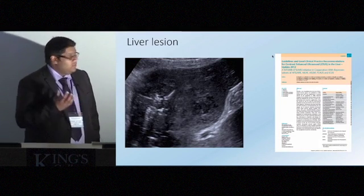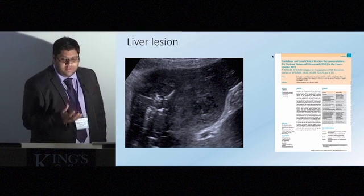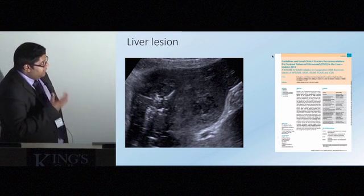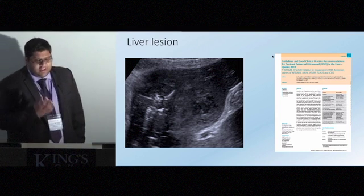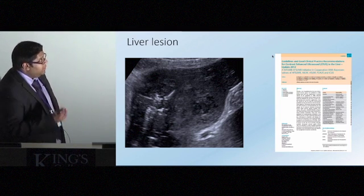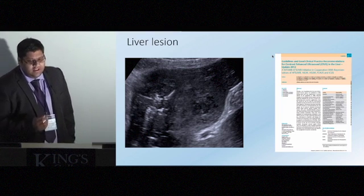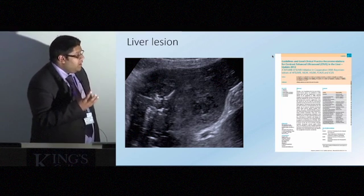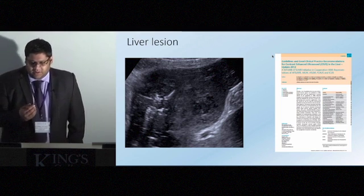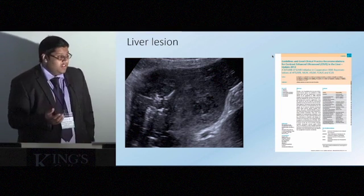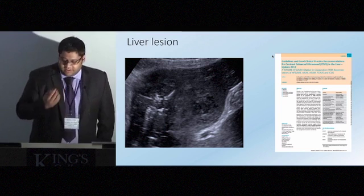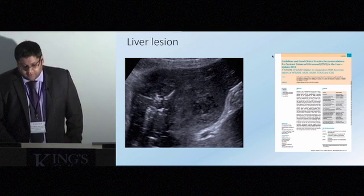Here we have an example: a patient with right upper quadrant pain and fever — a very typical presentation. We have a focal liver lesion, but it's a heterogeneous lesion with a hypoechoic central region — there's still a fair way to go to characterise that. As we've heard from previous speakers, the EFSM guidelines are in place and indicate a great number of uses of characterisation.